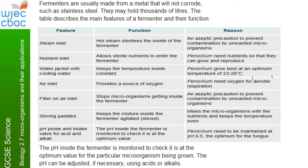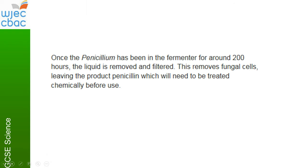The stirring paddles keep the mixture inside the fermenter agitated — agitated means stirred — and mix everything to keep the temperature even. The pH probe and intake valve for acid and alkali checks that pH is at its optimum value of 6.5, which is a very weak acid — remember, 7 is neutral and 1 is a strong acid. Once the penicillin has been fermented for around 200 hours, the liquid is drained from the bottom of the fermenter, filtered to remove all the dead fungal cells, and then treated chemically and purified before it can be packaged and used as an antibiotic.